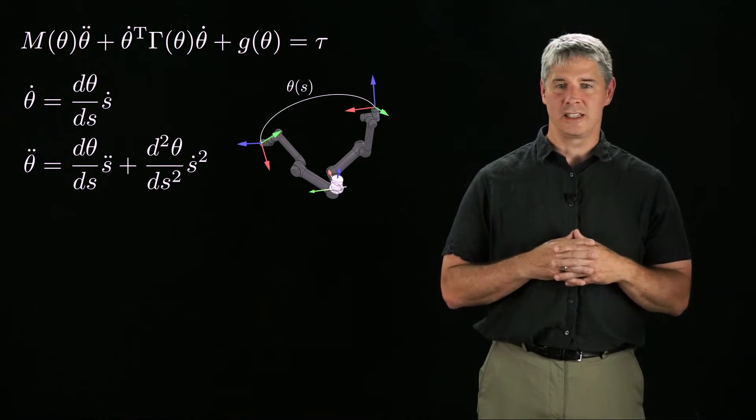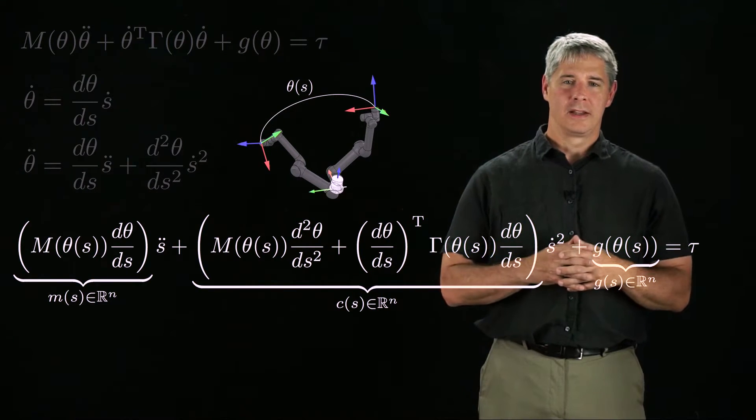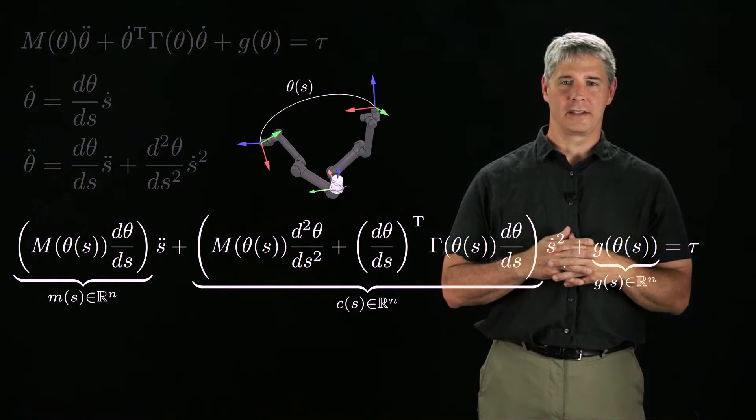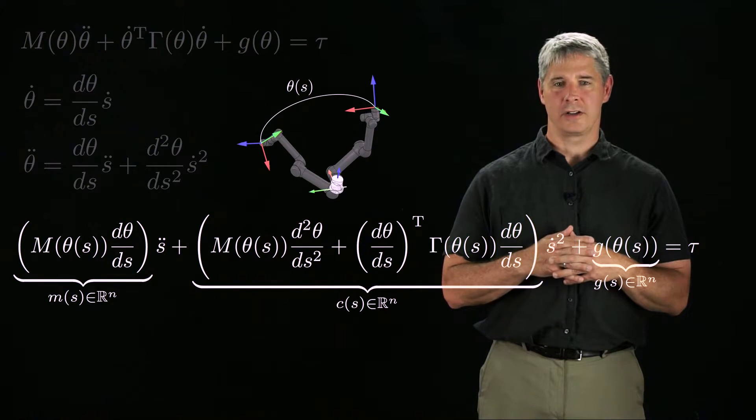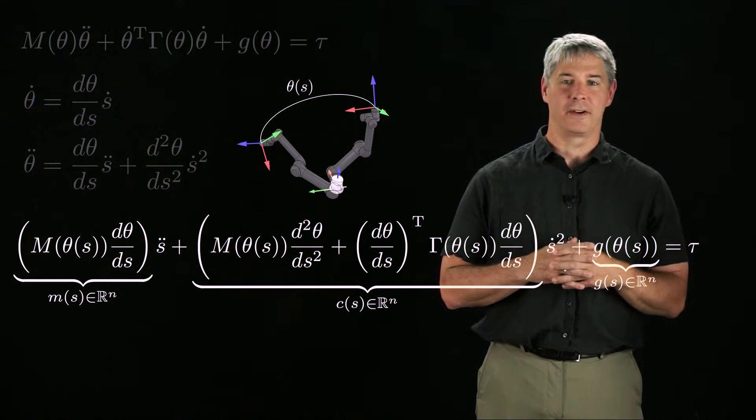Plugging these expressions into the dynamics, we get the expression shown here. Since the path is given in advance, the derivatives of theta with respect to s will also be known in advance, and only s, s dot and s double dot are variables.